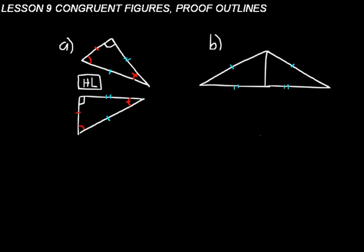Now look at B. We have two triangles and we have to prove that they're congruent. We have two sides with one tick mark and two sides with two tick marks — so they have two sides in common. That means we could use side angle side or side side side. But think about it — both triangles share the same middle side. So they have three sides in common, three sides of the same length. That would be the side side side postulate to prove those two triangles are congruent.